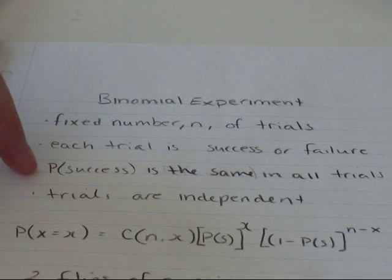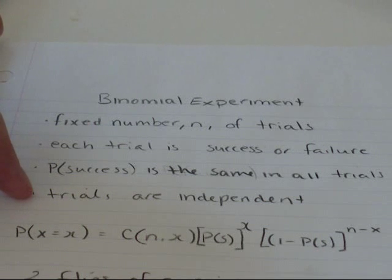The probability of success has to be the same in all trials. Your circumstances that you're conducting your experiment under don't change, and the trials have to be independent. Getting a head on the first flip of a coin doesn't make you more or less likely to get a head on the second flip.